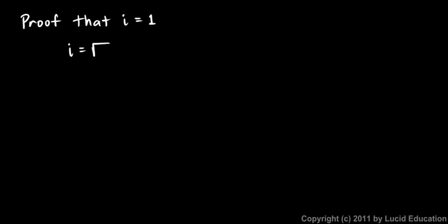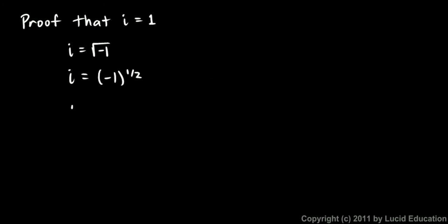i is the square root of negative 1 — at least that's one way to define it. The square root can be written as an exponent of 1/2, so we can write i as negative 1 to the 1/2. And 1/2, of course, is the same thing as 2/4, so i is negative 1 to the 2/4.